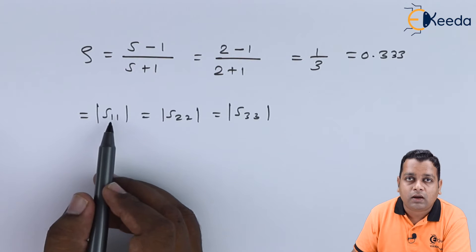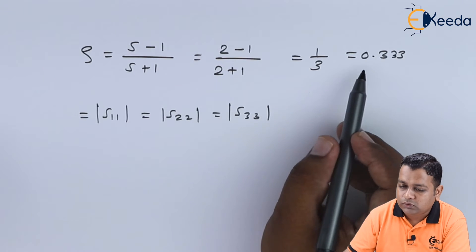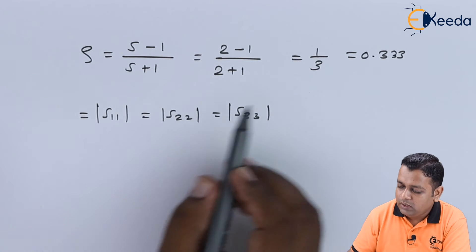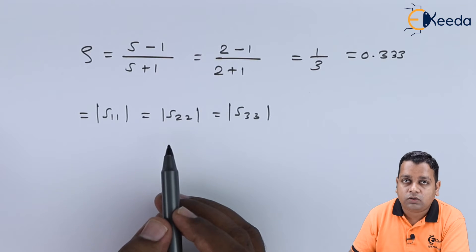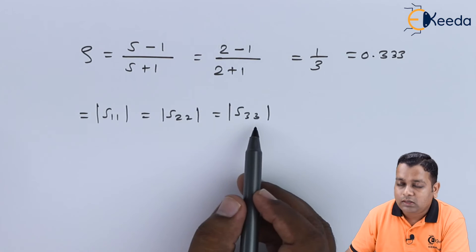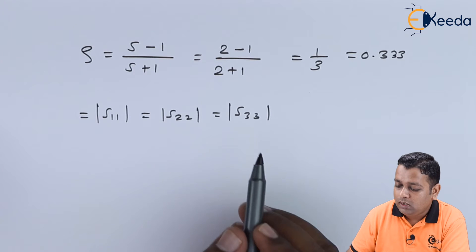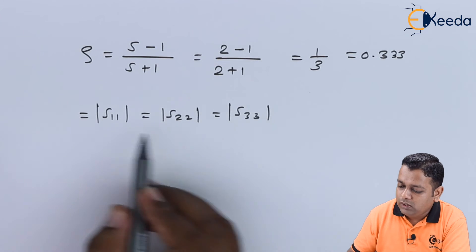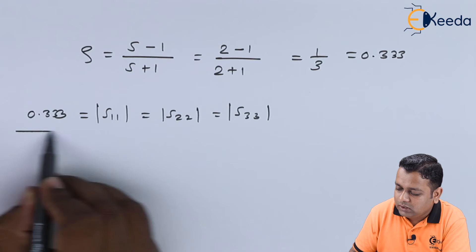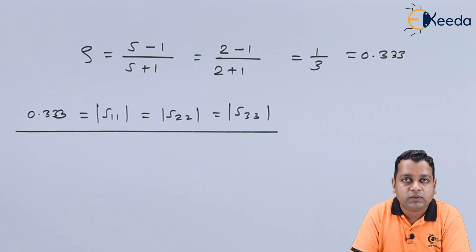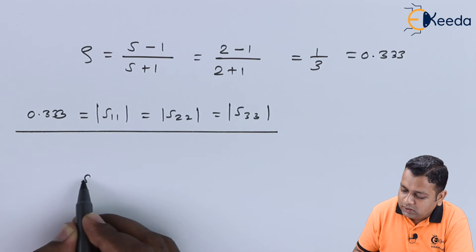So s11 = s22 = s33 = 0.333. This represents the reflection at each port: input at port 1 with output at port 1, input at port 2 with output at port 2, and input at port 3 with output at port 3. With this, the remaining three diagonal parameters are filled in, completing all nine elements of the scattering matrix.